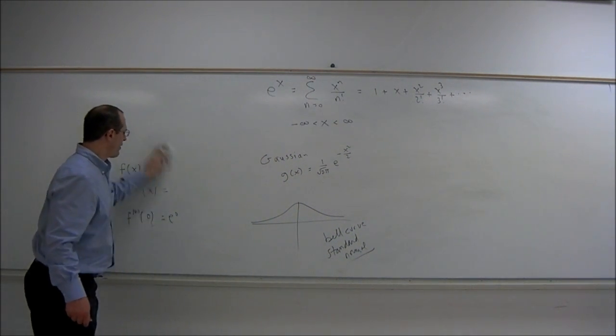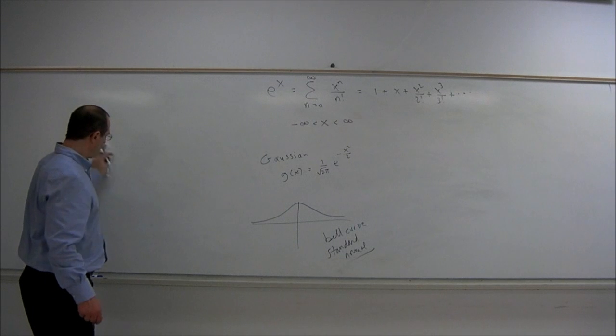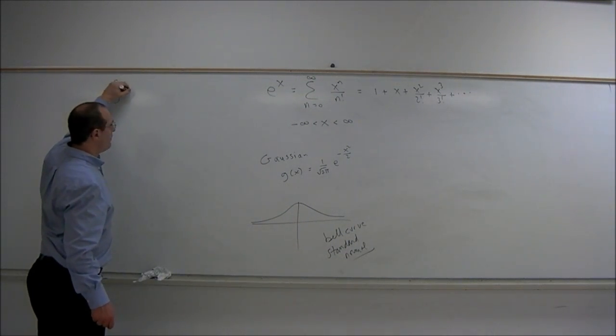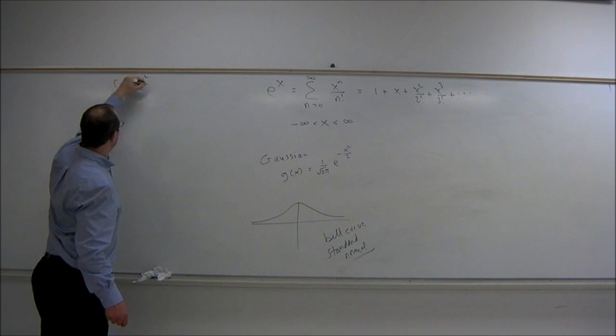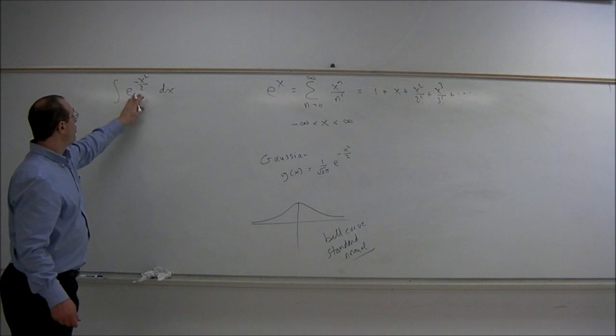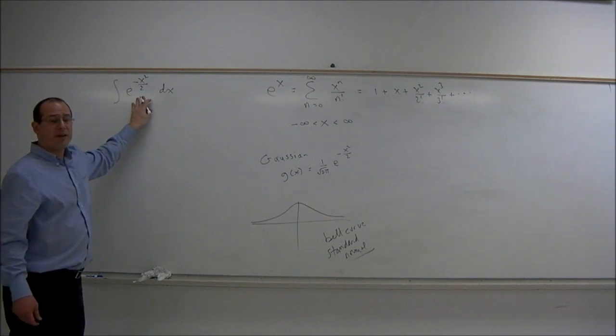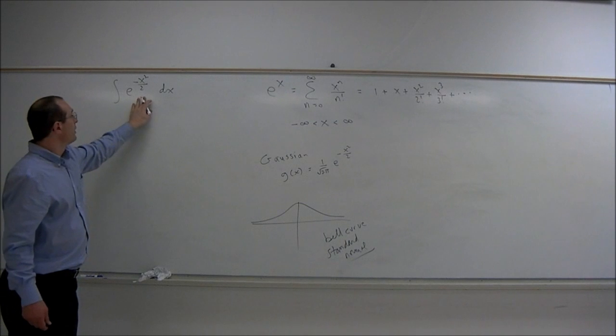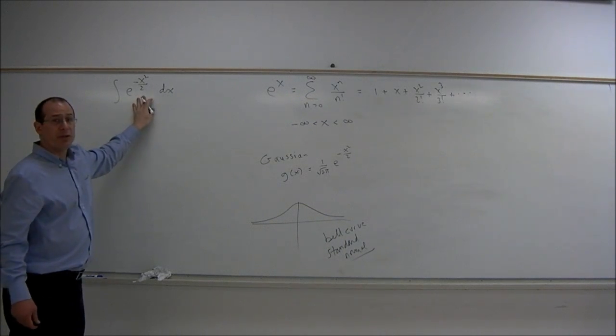In probability and statistics it's very important to integrate this function. So we're going to be interested in the integral of e^(-x²/2) dx. Now, unfortunately, it's going to be very difficult for us to find an antiderivative of this function. So what we'll do is use the power series.